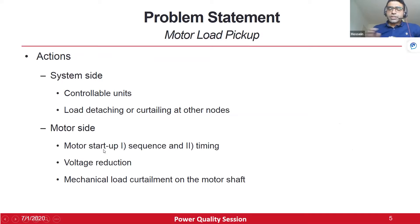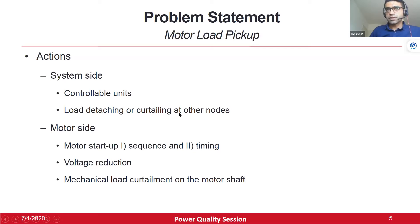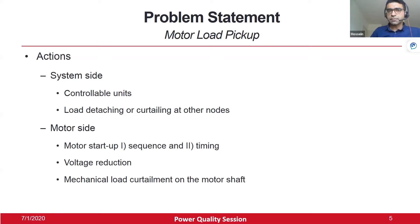On the system side, available actions include controlling dispatchable units such as DGs, detaching or curtailing loads at specific times in the network. On the motor side, we can change the startup sequence or timing of different induction motors, reduce the voltage at the motor hosting node using an autotransformer, or curtail the mechanical load on the shaft when starting the motor.